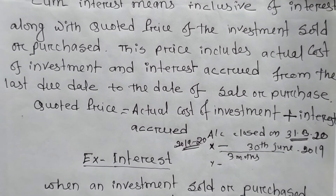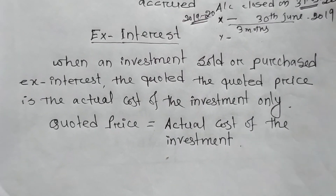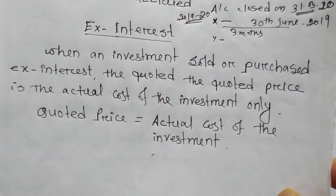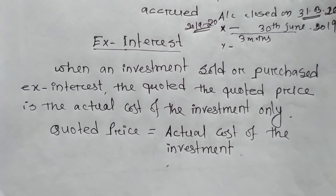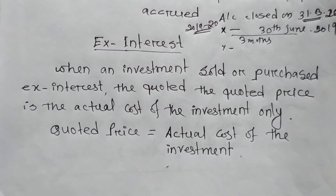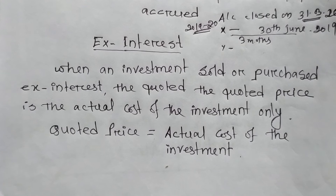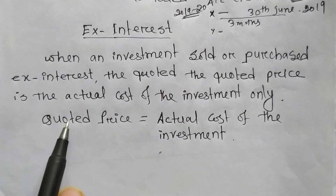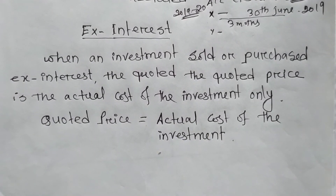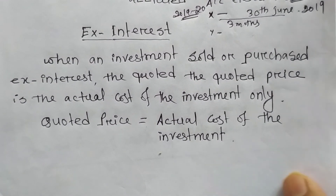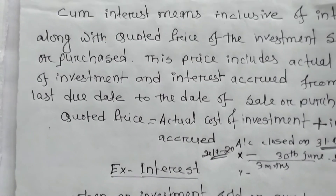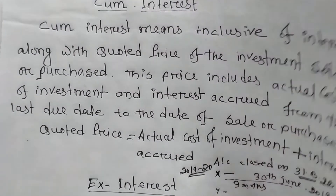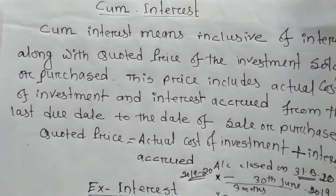Next, ex-interest — that is just the opposite of cum interest. Ex-interest means the quoted price of an investment which does not include the interest from the last due date to the date of sale or purchase. In this situation, the quoted price is always equal to the actual cost of the investment.